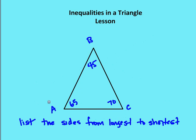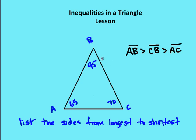Next practice problem: list the sides from longest to shortest. The answer: segment AB is opposite the largest angle, so AB is the longest side. Then segment CB is opposite the second largest angle. Then AC is opposite the smallest angle of 45 degrees, making AC the shortest side.